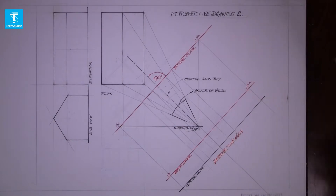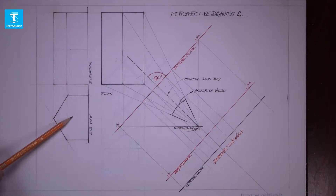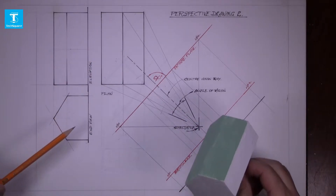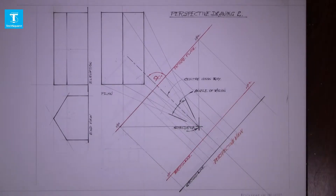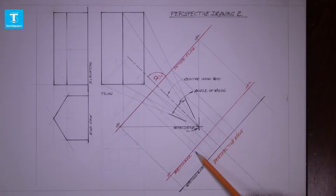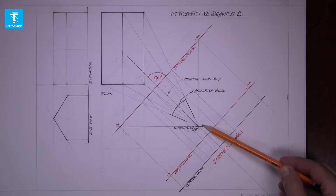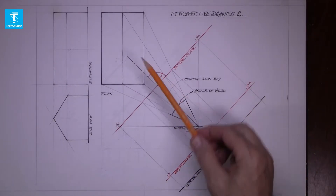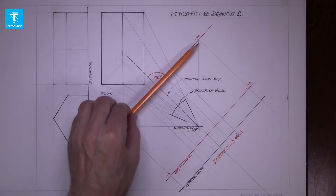Perspective drawing two. We are given the plan, the elevation and the end view of this model of a house. We are asked to draw the perspective view in this position here. Also given is the spectator, the centre-visional ray and at 90 degrees to it the picture plane.